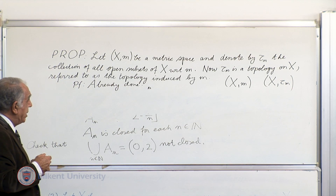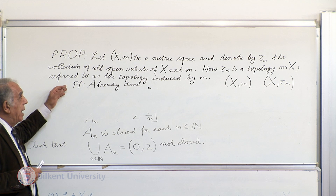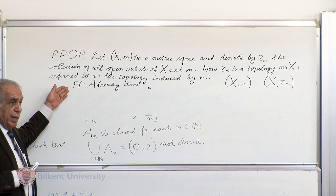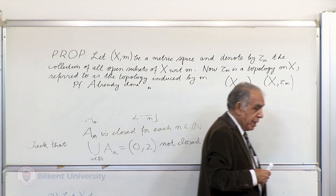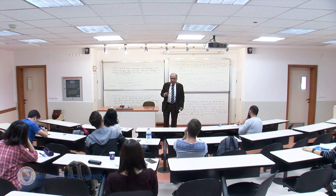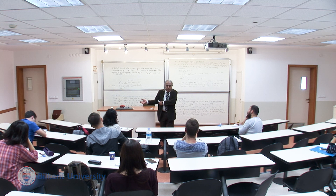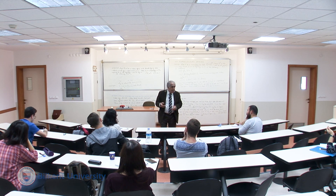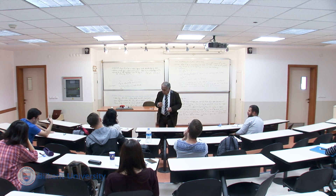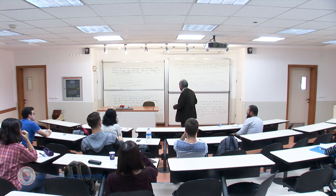We'll see examples. A natural question is whether the notion of a topological space is genuinely more general than that of a metric space. Because if every topology on a non-empty set is inducible by some metric, then they would be the same and there would be no need to introduce a novel notion. But as you might expect, the notion of a topological space will be more general, and we'll see that in our first example.